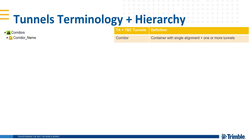However, a tunnel corridor can consist of multiple tunnels that can share a single alignment. For example, you can have an eastbound and westbound tunnel design in the same tunnel corridor if they share the same alignment. If you need a different alignment for westbound than eastbound, then you would need two separate corridors.